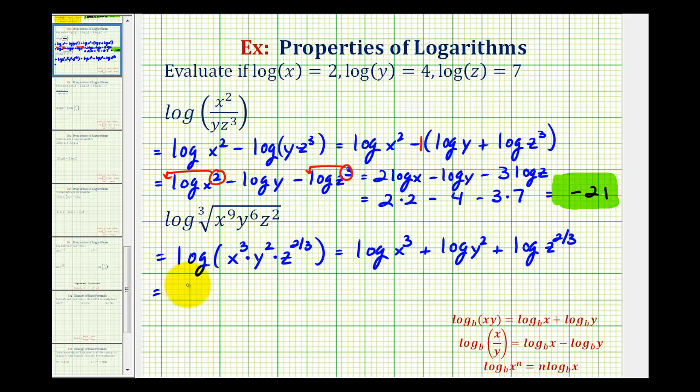Our exponents will be moved, so they become the coefficients. We'll have three log x, and these are all common logs, plus two log y. This will be plus two-thirds log z. Now we'll perform substitution for log x, log y, and log z, based upon the given information. We'll have three times log x, which equals two, plus two times log y, which equals four.